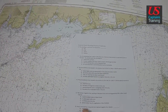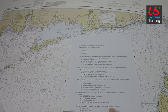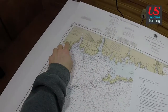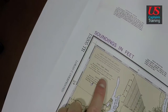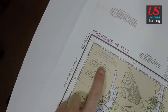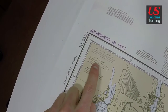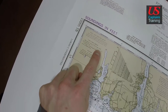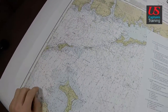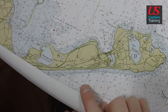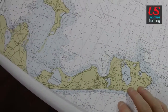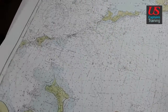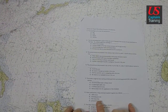Number six: areas enclosed by a long and short dash magenta line indicate — this could be a tough one without a little help. Long and short dash magenta lines — if you look up here, you can see the legend: boundary lines of fish trap areas are shown as long-short, long-short dashes in this reddish pinkish color called magenta. So these enclosed areas are fish trap areas, and they appear throughout this region of the chart.